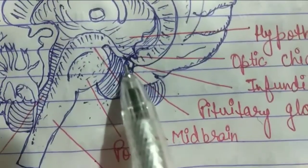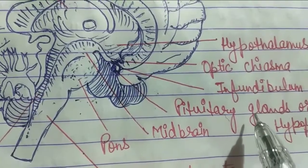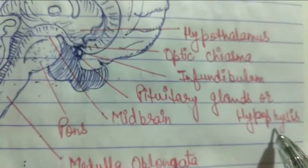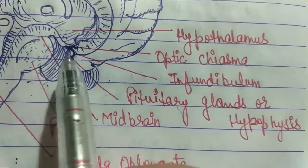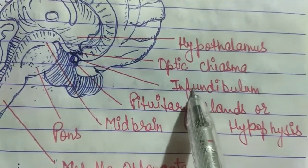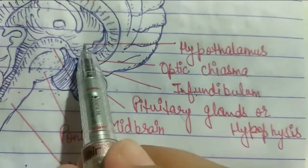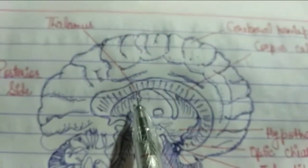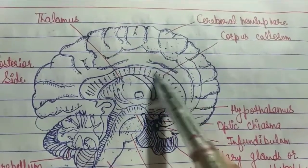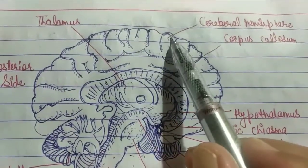This bulb-like portion is the pituitary gland, which we also call the hypophysis. Here is a portion which we call the infundibulum, and here is an arc-like portion which is the optic chiasma. This is the hypothalamus, this is the thalamus, and this region is the corpus callosum. And this is the cerebral hemisphere.